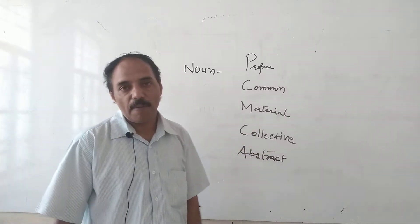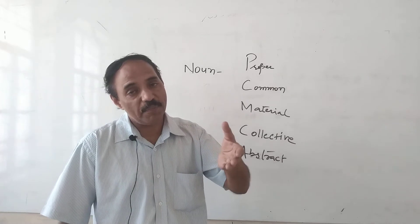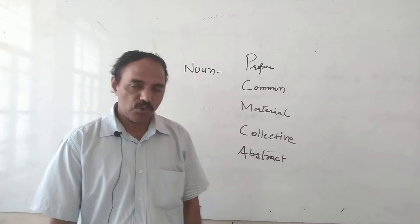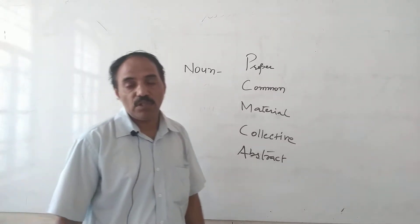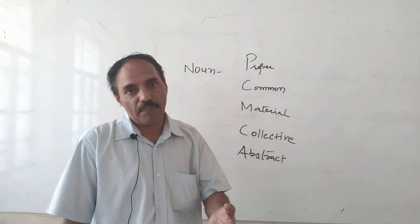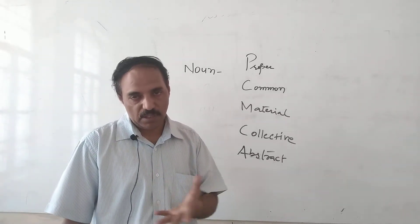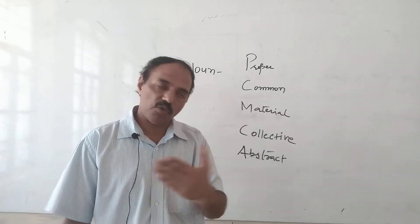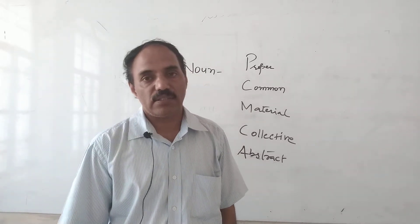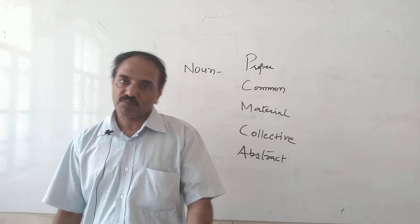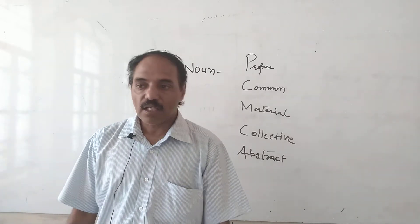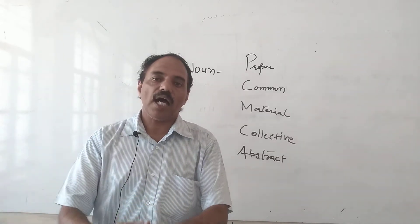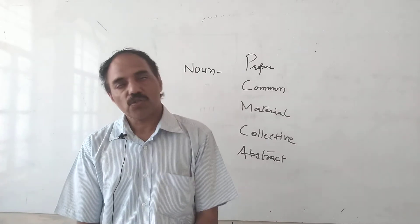Then, Material Noun - the things which are prepared from material, like gold, silver, wood, plastic - so that is material noun. Then Collective Noun - a group of someone, like group of army, group of flock of birds, group of ships, group of sheep. Class is a group of students. College is a group of professors and teachers. Army is a group of soldiers.